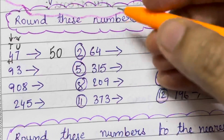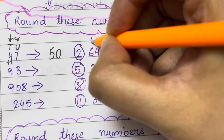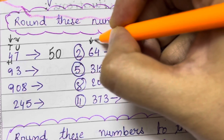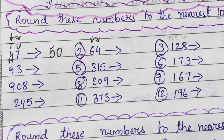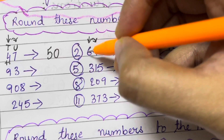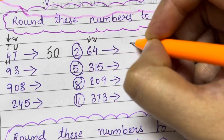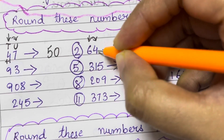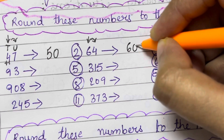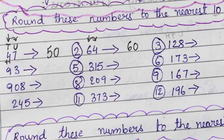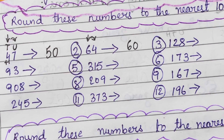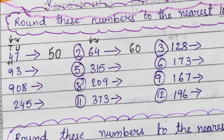Now for the second one, 64. The tens place is 6, and the digit after that is less than 5. So the number won't change in the tens place — we just write down 6. And the place of 4 has been changed with 0. So the answer is 60. So 64 has been rounded to 60.